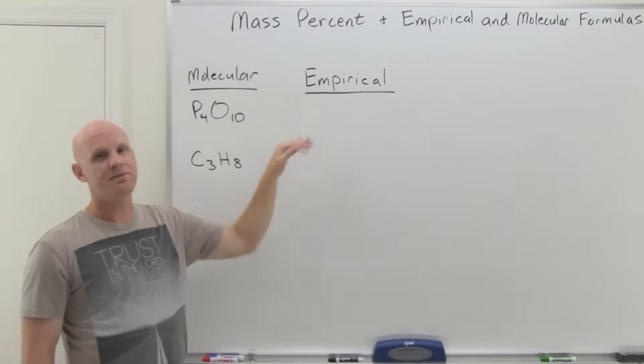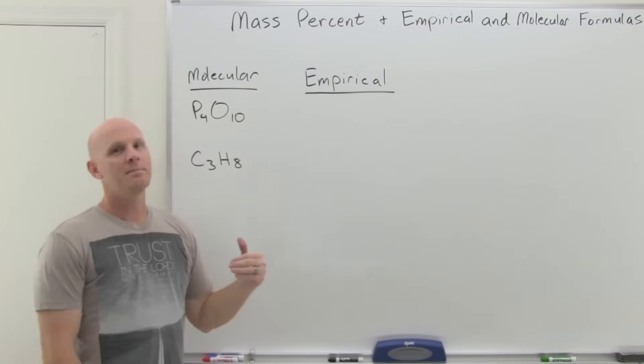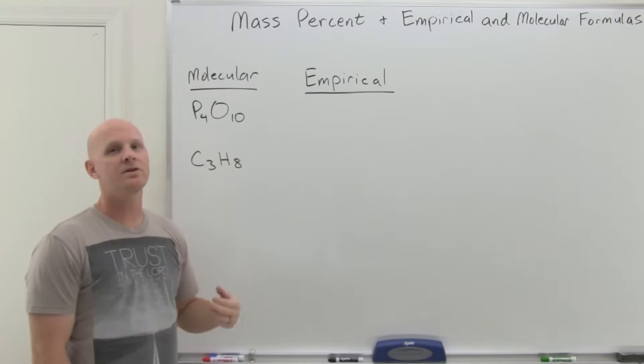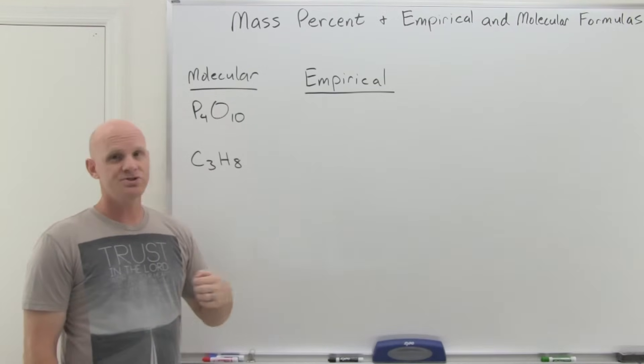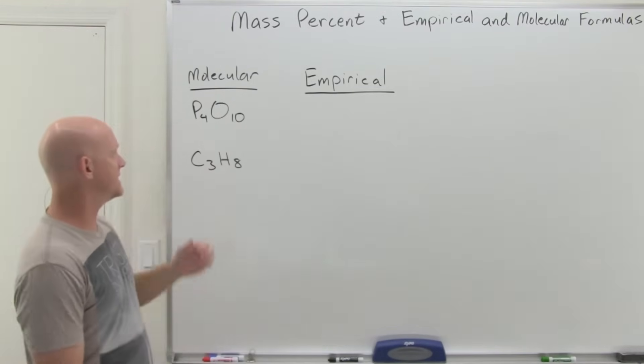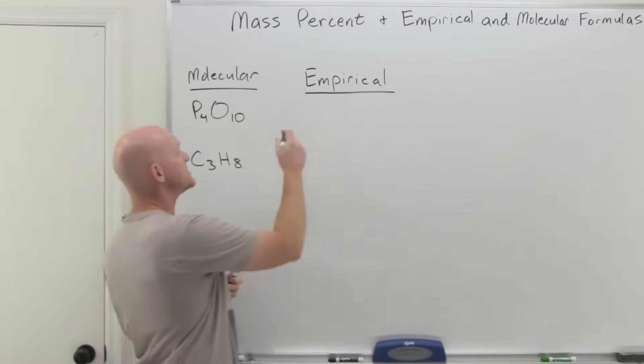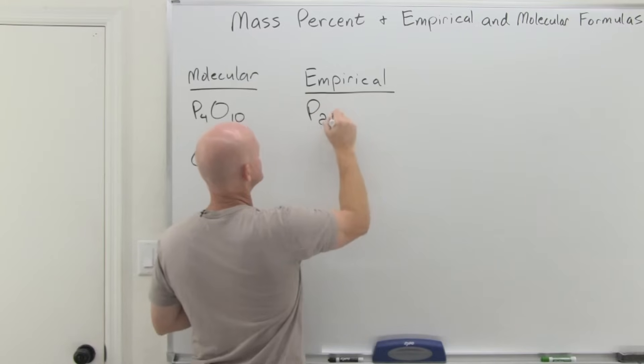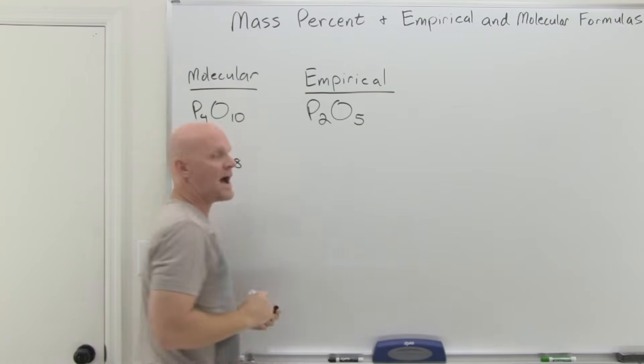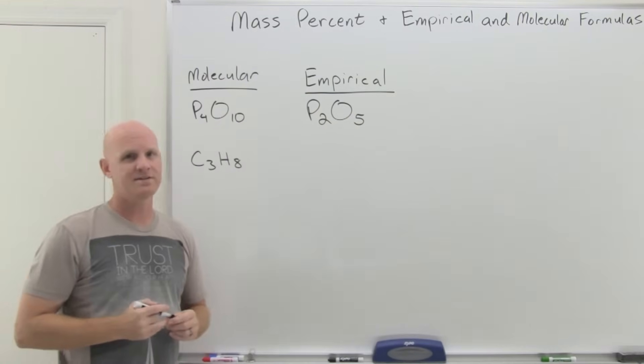The empirical differs from that—I say differs because it doesn't always differ—but the empirical is going to be the most reduced integer or whole number ratio between the atoms. So a 4 to 10 ratio, those are both divisible by 2, and so we can reduce that down to a 2 to 5 ratio, and that would be the empirical formula instead.